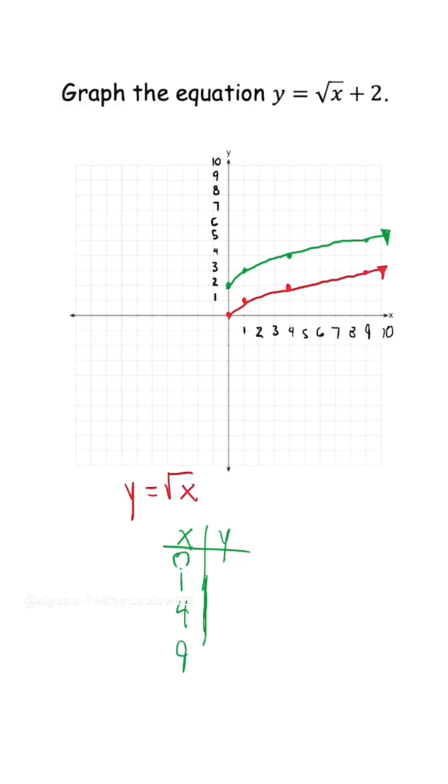So when we plug in 0, we're going to get a y value of 2. That's the first point. When x is 1, the square root of 1 is just 1, plus 2 gives us a y of 3.